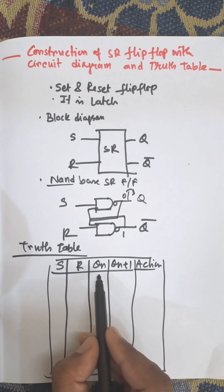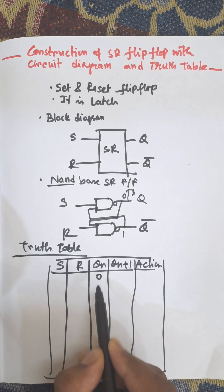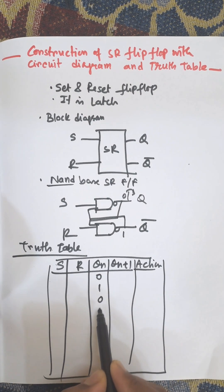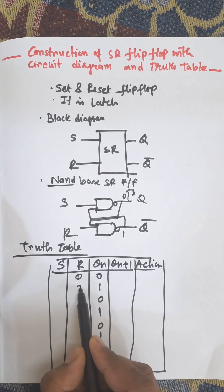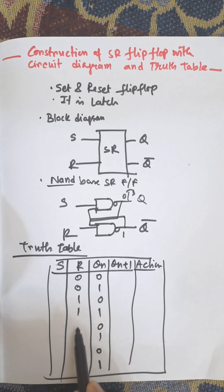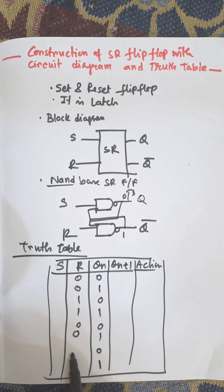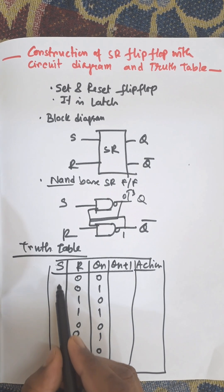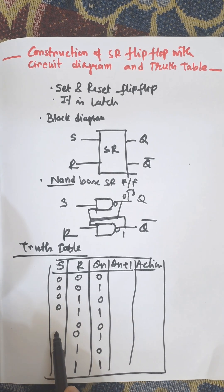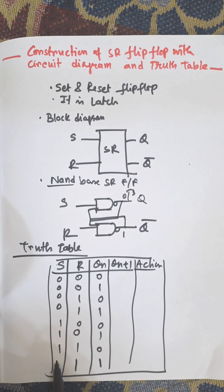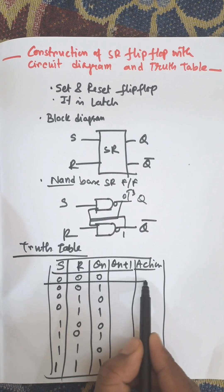The input combinations are: S=0 R=0, S=0 R=1, S=1 R=0, S=1 R=1. For each, QN takes values 0 and 1, giving us eight rows: QN = 0,1,0,1,0,1,0,1 and the corresponding QN+1 values: 0,0,0,1,1,1,1,1.